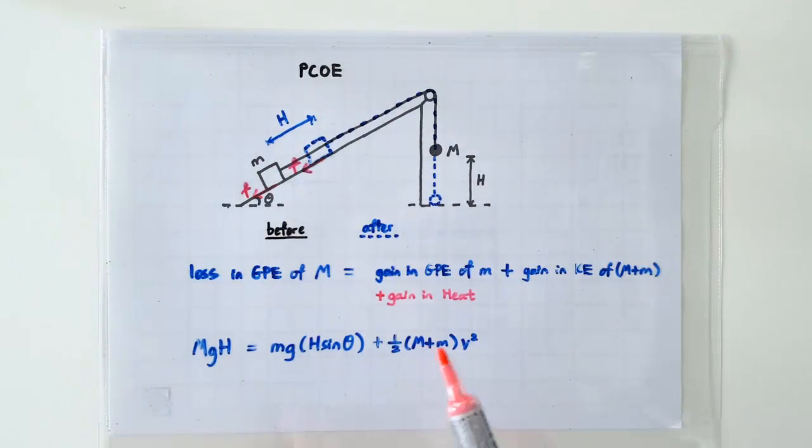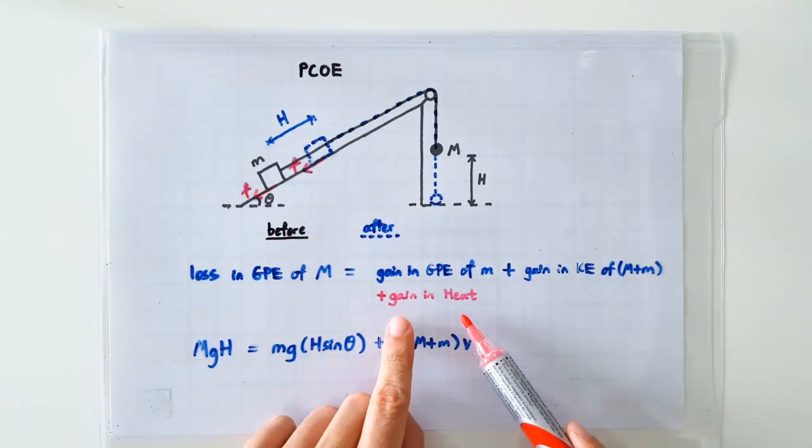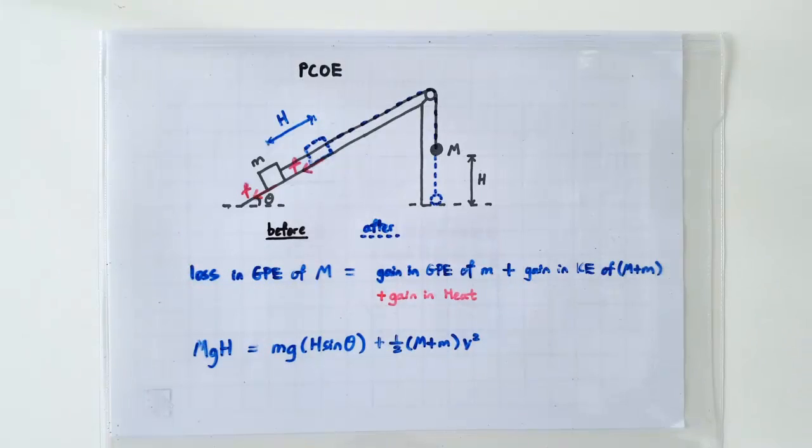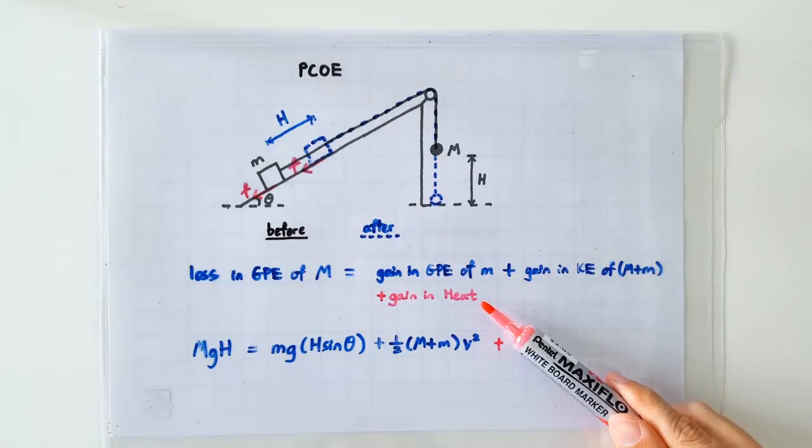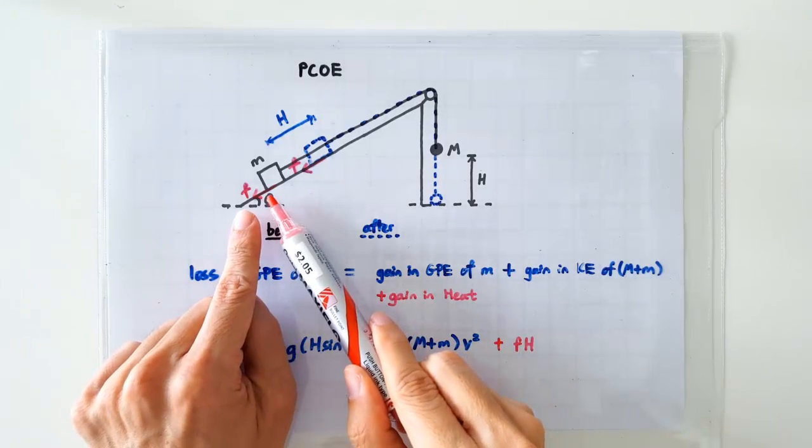Yes, we can, provided that we include the work done by the frictional force as a gain in heat energy in our equation here. The amount of heat produced can be written as F times H, which is the magnitude of the work done by the frictional force.